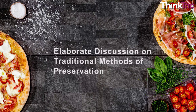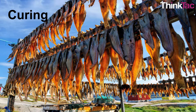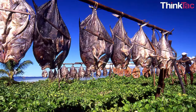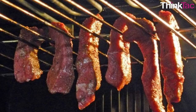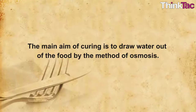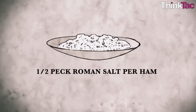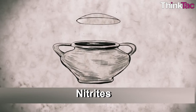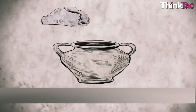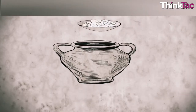We will talk about some traditional methods now. Curing. The earliest form of food preservation was curing or drying. It is used most commonly for fish, meat and vegetables. The main aim of curing is to draw water out of the food by the method of osmosis. It is also done by adding the combination of salt, nitrites, nitrates and sugar.